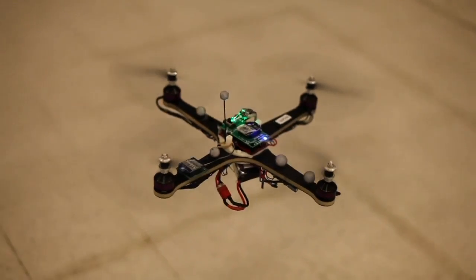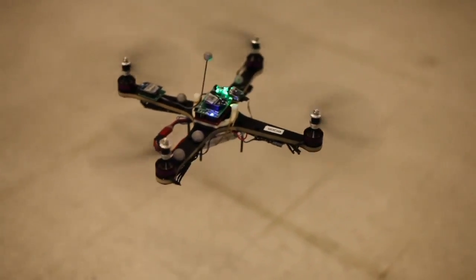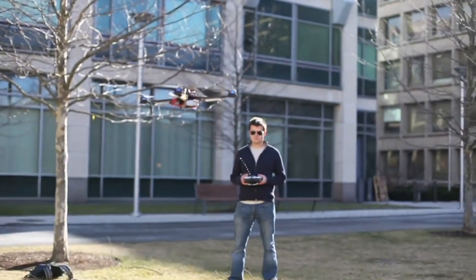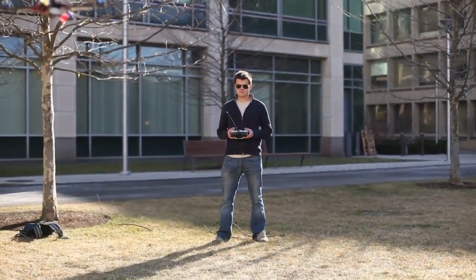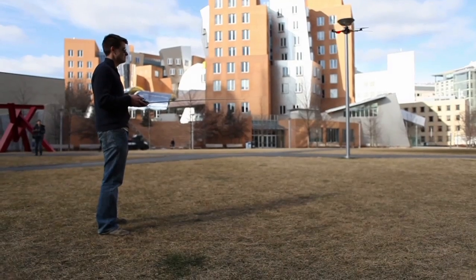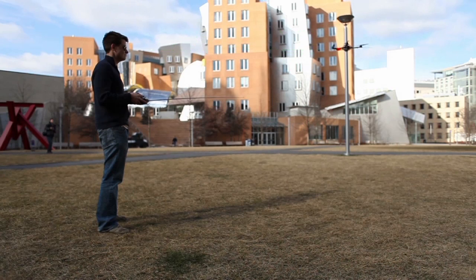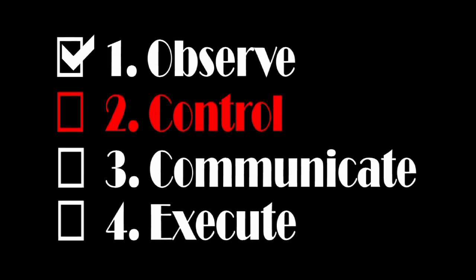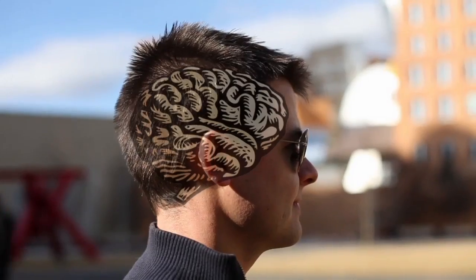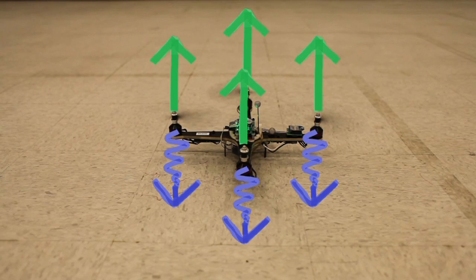Now we know the basic physics of how a quadrotor flies, but before we can make it fly robotically, we need to know how to control it. Let's figure out how a human would do this. The task can be broken down into four key steps. First, the pilot uses his eyes to observe the vehicle and figure out where it is and in which direction it's pointing. In this example, let's say that the pilot sees that the quadrotor is sinking. Next, the pilot has to decide what control commands to give the vehicle. In this case, the pilot has to stop the vehicle from sinking and thus decides to increase the speed of all four propellers.